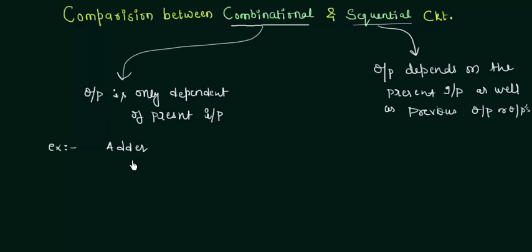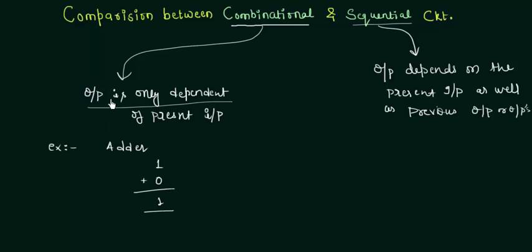In the adder it is very simple. If you are adding a single bit — say one with zero — you get one. Is there any use of the previous output in this adder? Definitely not. There is no need for the previous output in this addition, so it satisfies our condition that the output is only dependent on the present input.